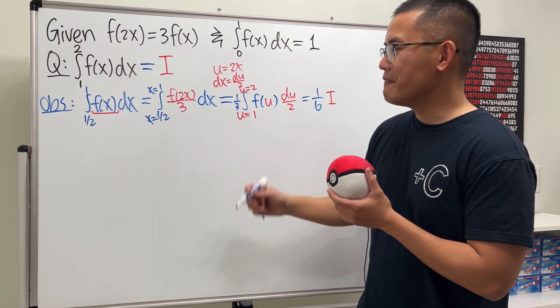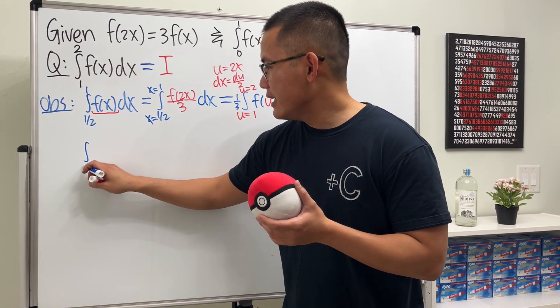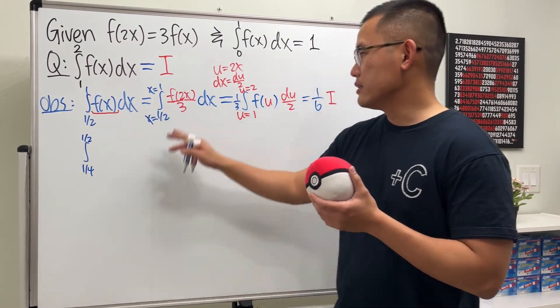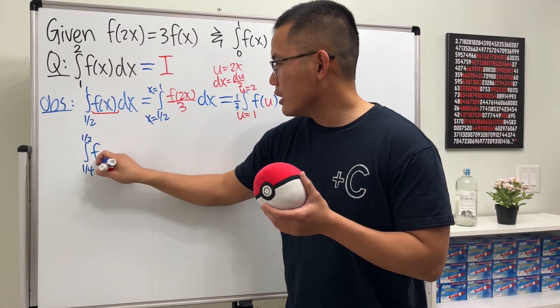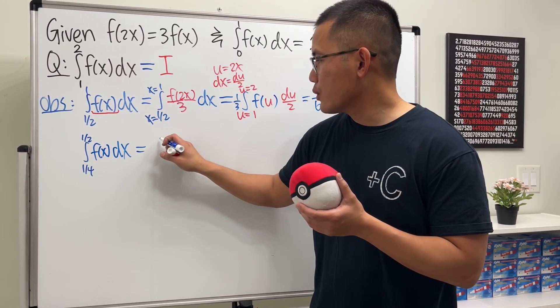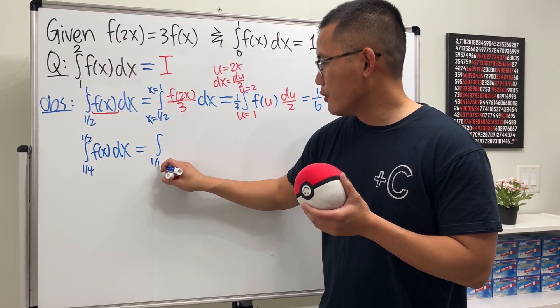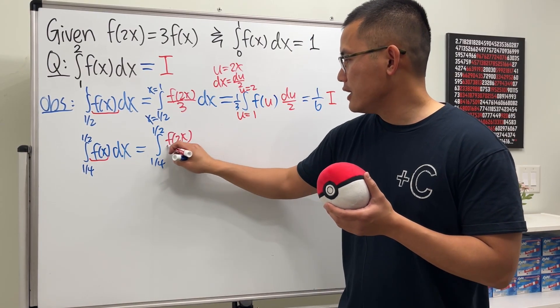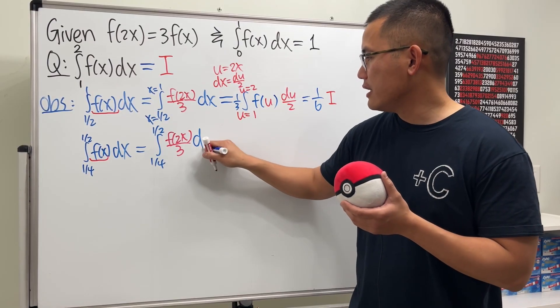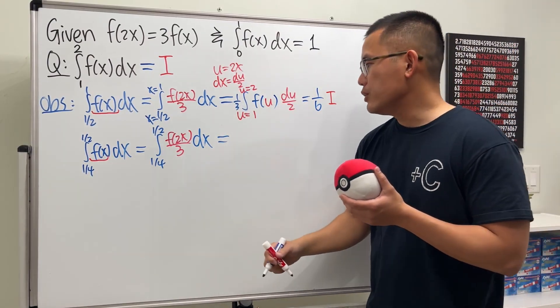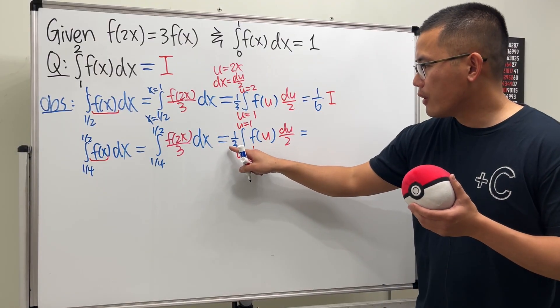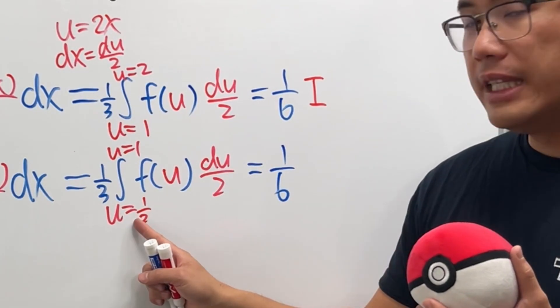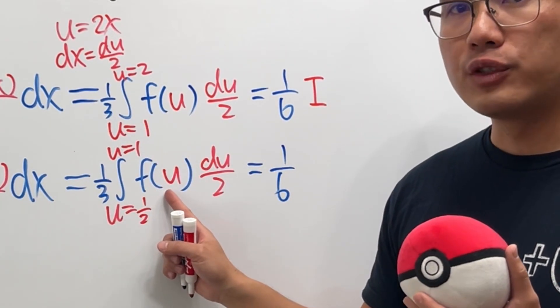And one way to see that is, you can just interpret this as the area under the curve f of x or f of u. They have the same area, regardless which variable that you use. So, we can say the rest is just 1 over 6 times i. Cool. Now, we continue with the same fashion. Look at the integral going from 1 over 4 to 1 over 2. Again, we divide this enough by 2 because similar things will happen. So, here, let's go ahead, put down f of x dx. And this is the integral, and we will just have 1 over 4 to 1 half. And again, this will be f of 2x divided by 3, and then we have the dx.